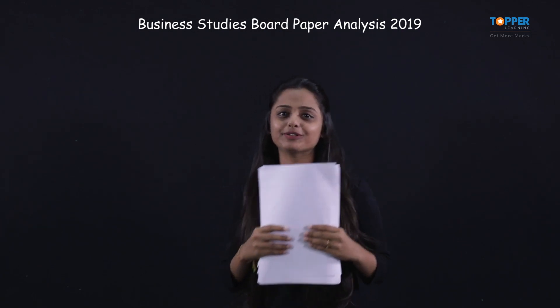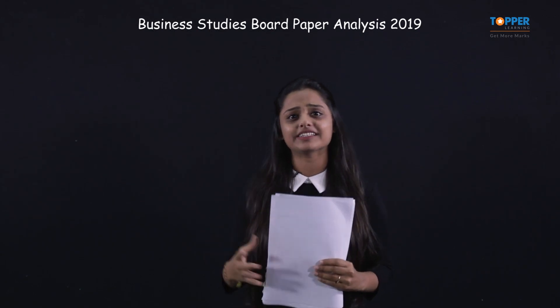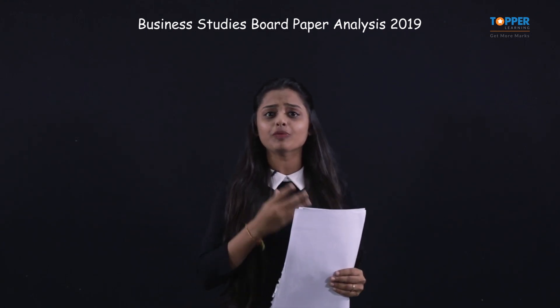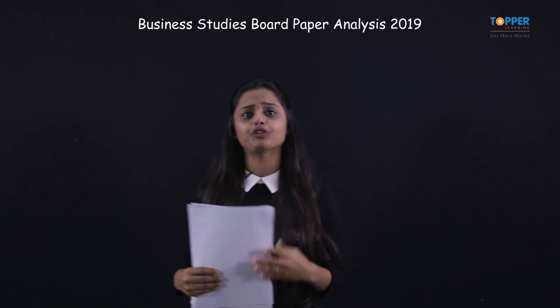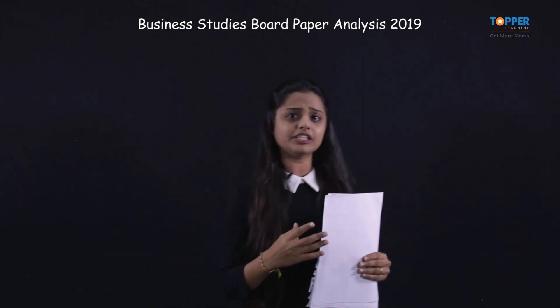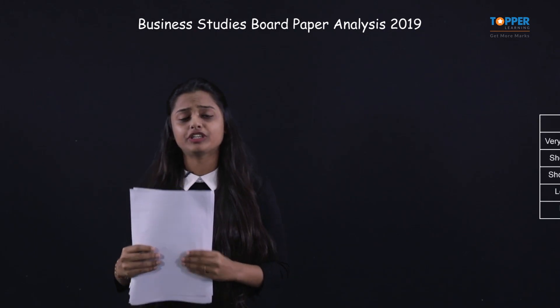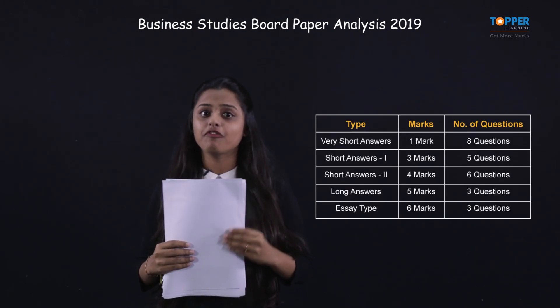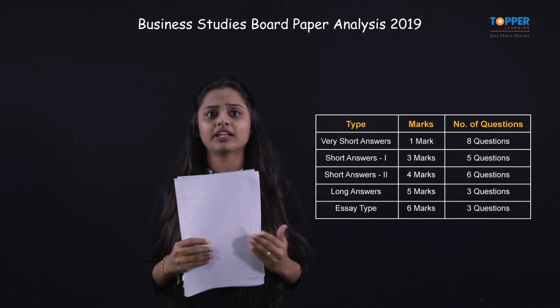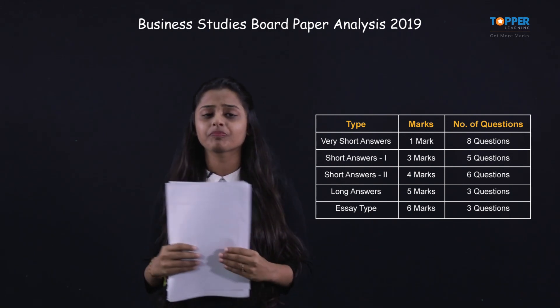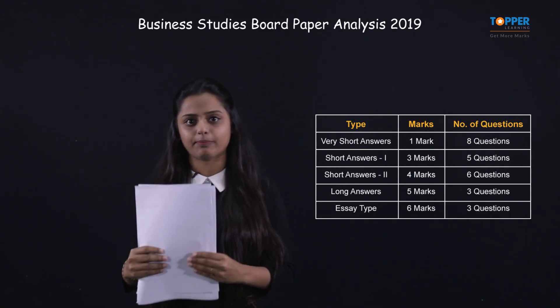Before diving deep into the analysis, let us first understand the paper pattern. The Business Studies theory paper is for 80 marks and there are 25 questions. The 25 questions are divided into five sections based on the typology of questions given by CBSE: very short answer questions, short answer questions 1, short answer questions 2, long answers, and essay type questions.